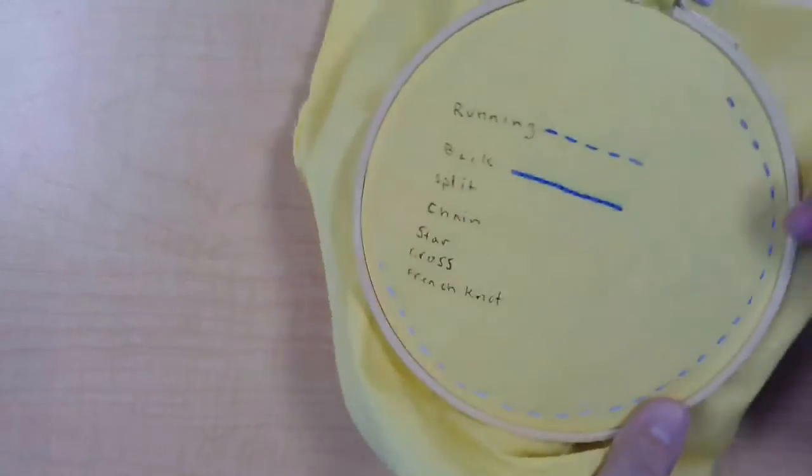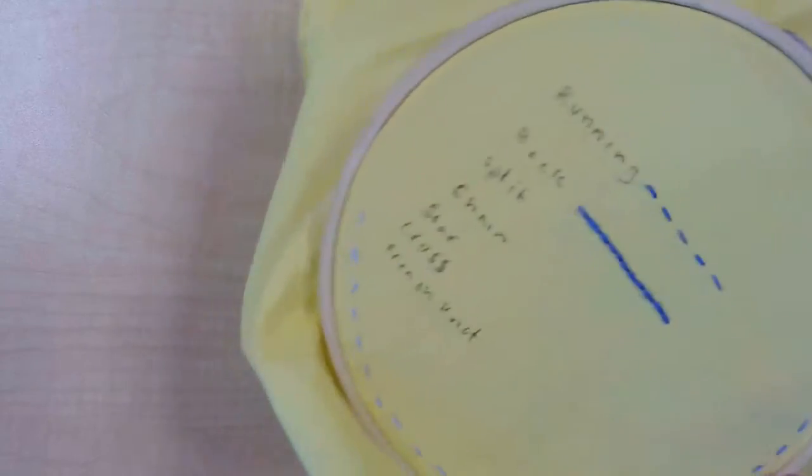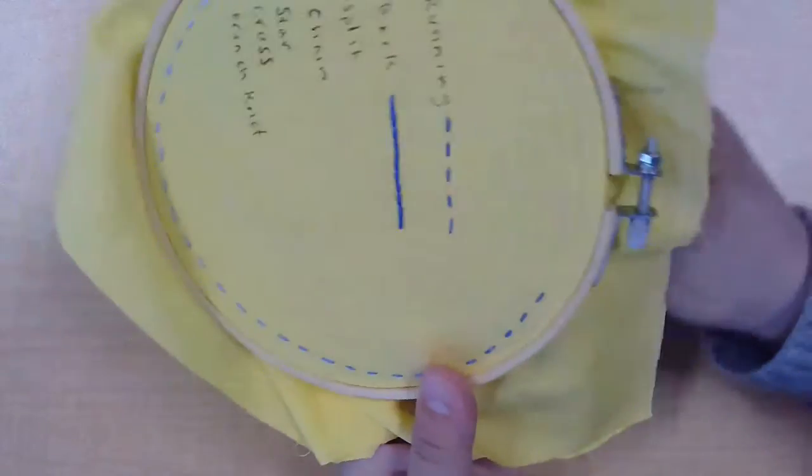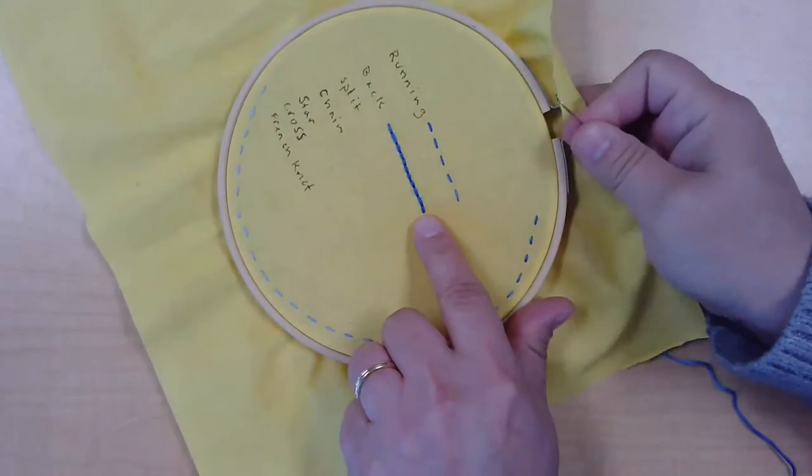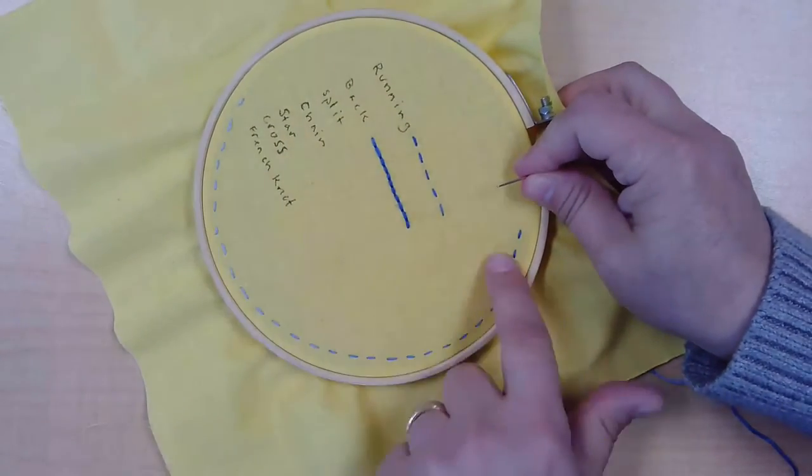Now if you want, you can practice this stitch in empty space around the rest of the hoop. You can make concentric circles, you can work wherever you've got empty space on the rest of this fabric.